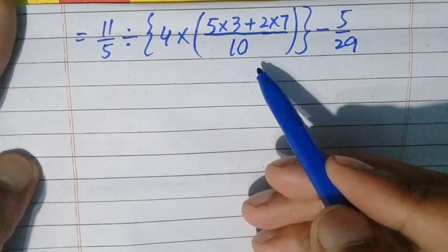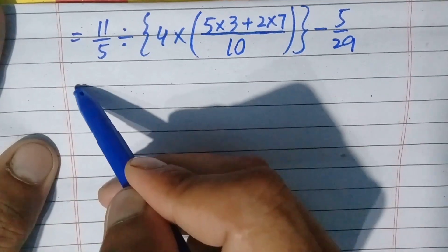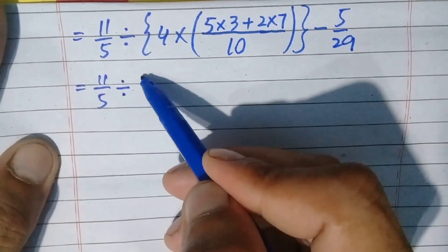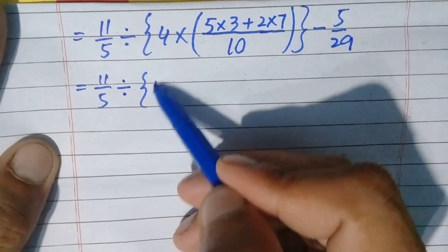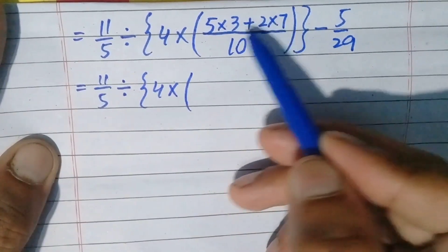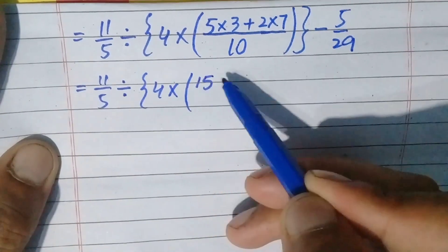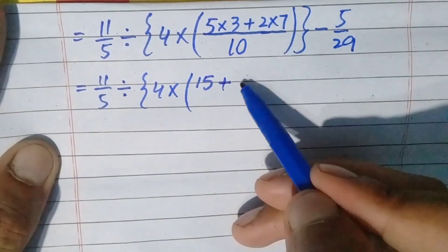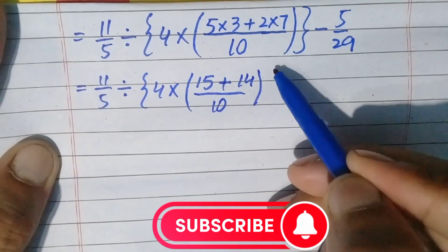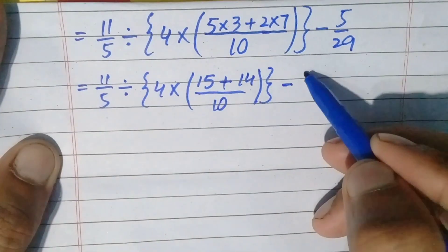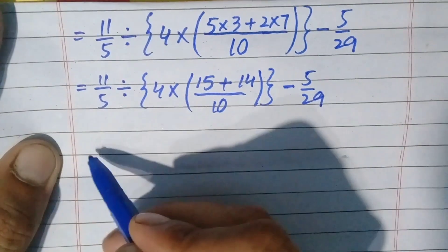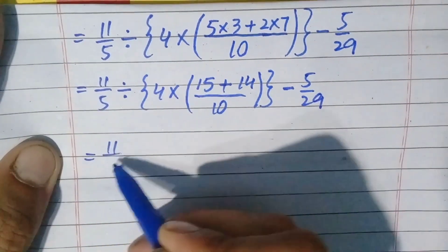We further simplify the numbers inside the parenthesis. Write the remaining question: 11/5 divided by braces open, 4 multiply, parenthesis open. Simplify the numerator: 5 times 3 is 15, plus 2 times 7 is 14, and we write 10 in the denominator. Parenthesis close, braces close, minus 5/29.